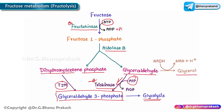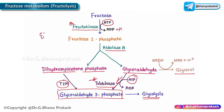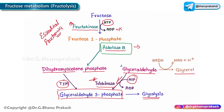There are two important diseases associated with deficiency of these enzymes. A deficiency of fructokinase leads to a condition called essential fructosuria. A deficiency of aldolase B leads to an important disease called hereditary fructose intolerance. These are the two diseases associated with fructose metabolism.